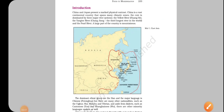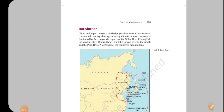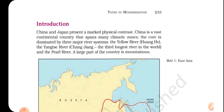Hello students, let's continue with chapter number 11, Paths to Modernization. So far we have studied the introduction of the chapter, in which we have read that this chapter is basically about China and Japan — how the situation of both these East Asian countries changed in the 19th century. On one hand, Japan became a modern nation; on the other hand, China was facing conditions of civil war. Now, first of all, we are going to focus on the contrasting details about both countries.